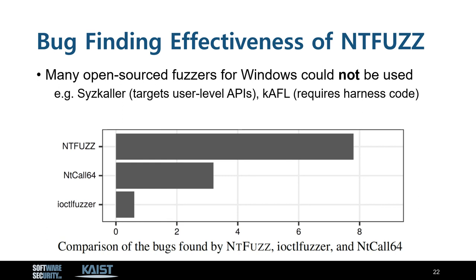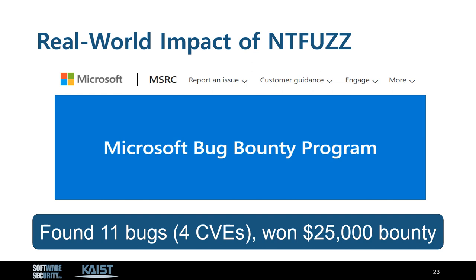Next, we evaluated the effectiveness of NT-Fuzz on the latest Windows 10 and compared it against other tools. We compared NT-Fuzz against WinAFL and IOCTL fuzzer. NT-Fuzz found about 8 unique bugs on average and outperformed other tools. In total, NT-Fuzz found 11 bugs from the latest Windows 10, and 4 of the bugs were assigned CVEs. Moreover, these CVEs were rewarded with $25,000 of bounties in total due to their critical security impacts. This highlights the practical impact of NT-Fuzz in the real world.